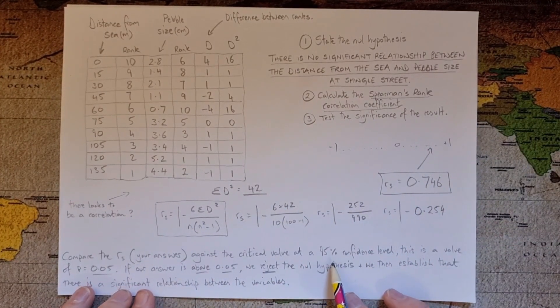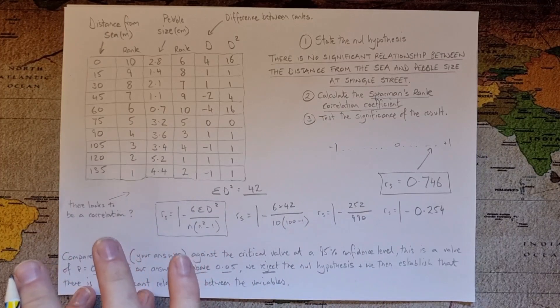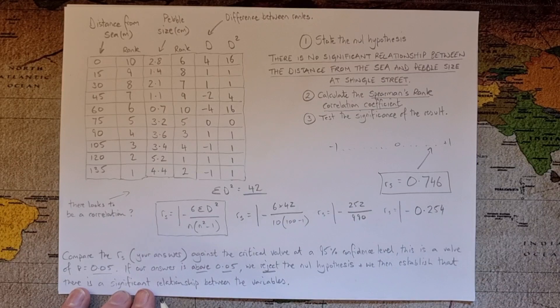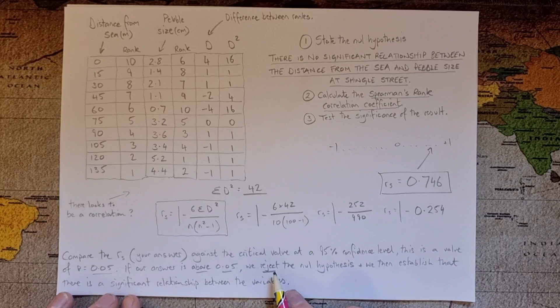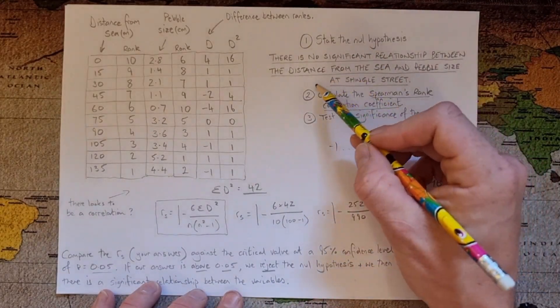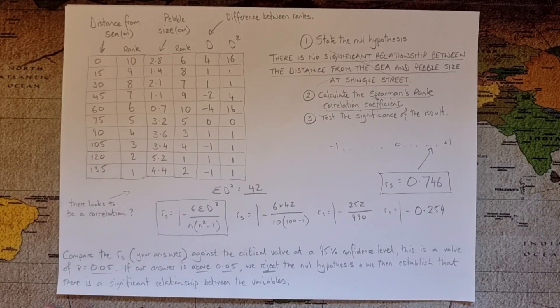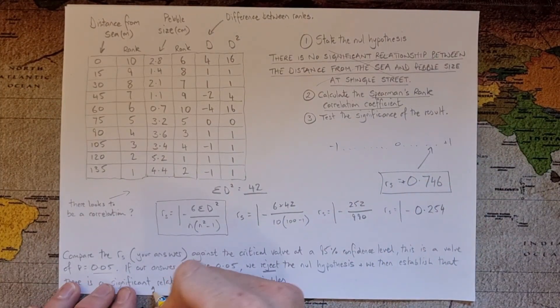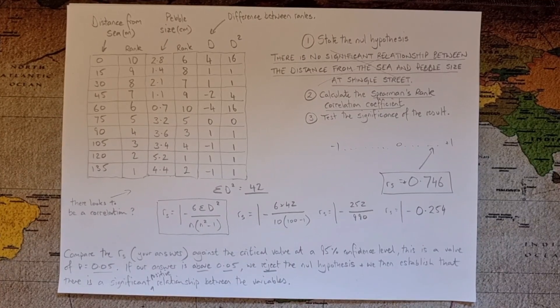Okay, what we then do is to compare our Spearman's rank answer, so this number here, against the critical value at a 95% confidence level. So are we 95% sure that the answer to our stats test is going to be accurate. So for the purposes of what we're doing here we'll use the value of 0.05, which is what we usually get in an exam question, but we would be given a table for that so you haven't got to worry too much about that. If our answer is above 0.05 in this case, then what we do is reject this null hypothesis, so we're saying that is not correct, and therefore we establish that there is a significant relationship between the two variables. Actually it's a positive number isn't it, so actually this is a significant positive relationship, i.e. as one goes up the other goes up. There is significant statistical relationship between these two sets of data.